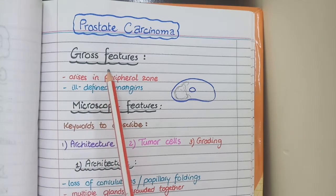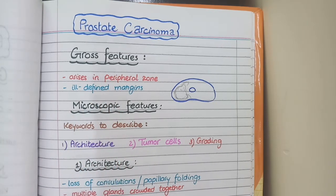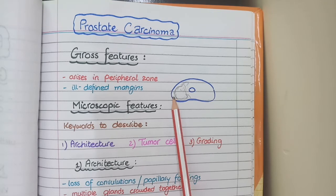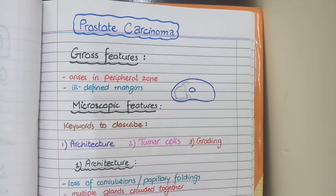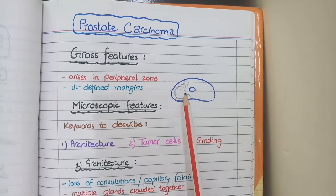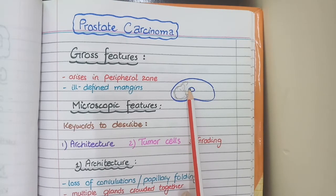Firstly, on the gross specimen of prostate carcinoma, you will see that prostate carcinoma arises from the peripheral zone of prostate. This differentiates prostatic carcinoma from benign prostatic hyperplasia which arises in the central zone, but prostate carcinoma arises in the peripheral zones.